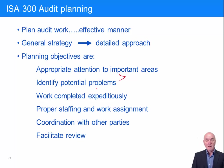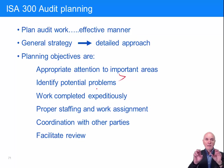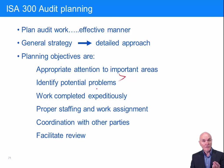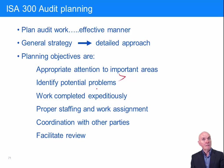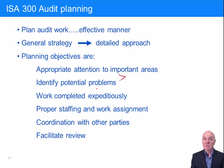Proper staffing and work assignment. First: how many staff — determined to some extent by the size of the client and how many branches, factories, or warehouses they have. Second: what sort of skills the staff need. In a very simple audit, junior staff can do it; in more complicated audits, you need more skilled staff. Ideally, the audit team includes someone who was there last year in a junior capacity and has now moved up a notch to be in control of the audit team at the client.